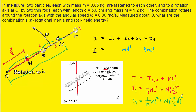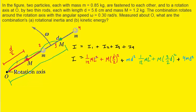We won't forget to square that value. We plug the expressions for I1 and I3 into our total rotational inertia equation. Also, we can see from the diagram that the length of each rod is actually the distance d, so we replace l with d for both I1 and I3.